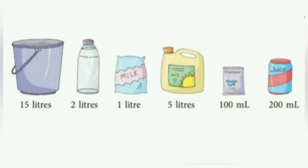Just look at this picture. You can see the capacity of bucket is 15 liters, bottle is 2 liters, milk packet 1 liter, oil 5 liters, shampoo pouch 100 mL (means hundred milliliters), and juice can 200 milliliters.